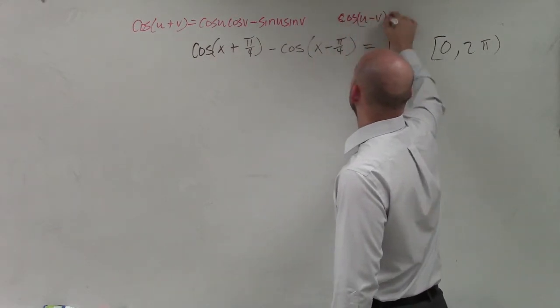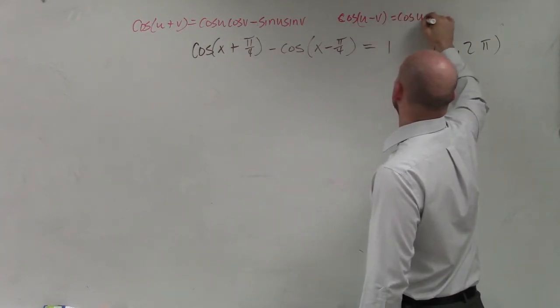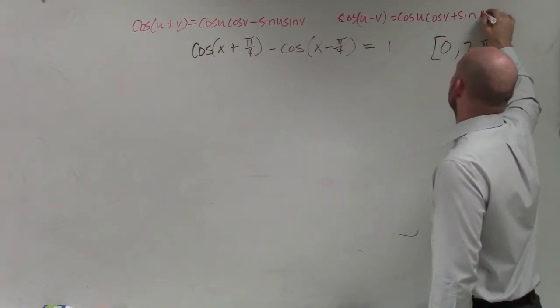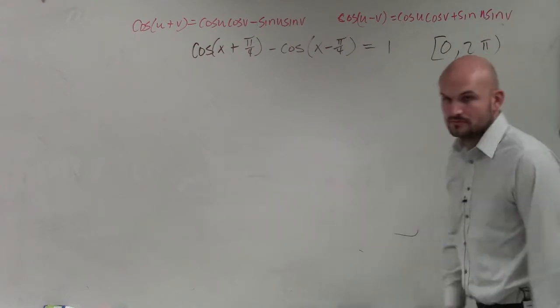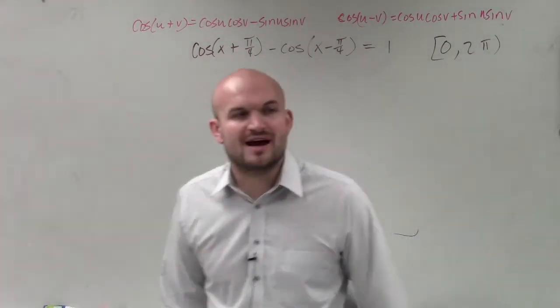And then the difference of two angles is going to be cosine of u minus v, which is going to be cosine of u times cosine of v plus the sine of u times sine of v. Right? Those are your two formulas. We're provided with them.